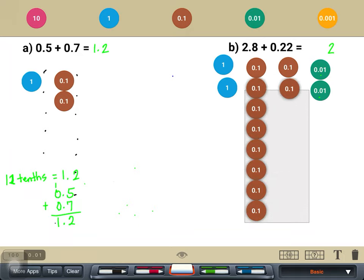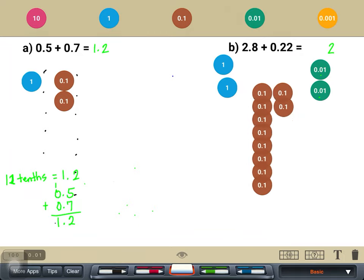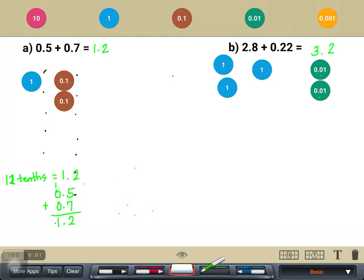And that would now be, let's regroup it. Yes, it can create 1 ones. So it will now be 1, 2, 3 ones. So our final answer would be 3 and 2 tenths.